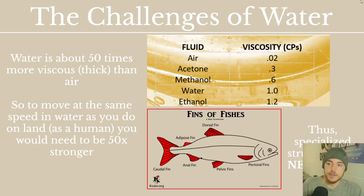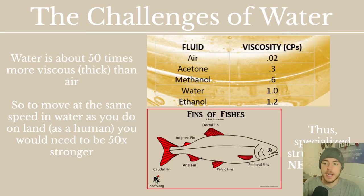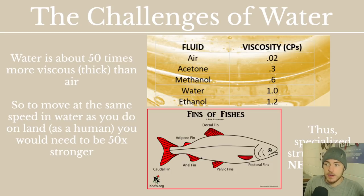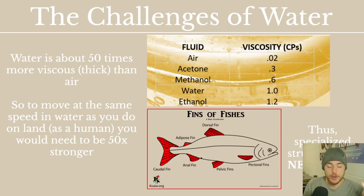The first thing to talk about is the environment that we are living in as a fish. Fish live in water — we talked about that as one of the requirements of being a fish, that they are aquatic. Water is about 50 times more viscous than air, as you'll see by this chart, which essentially means 50 times more thick. So it is 50 times harder to move through water than it is to move through air. If you were a human standing in water with the same gravity and you wanted to move at the same speed as you can run, you would need to be 50 times stronger, because the substance you're moving through is 50 times more viscous.